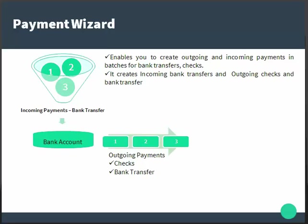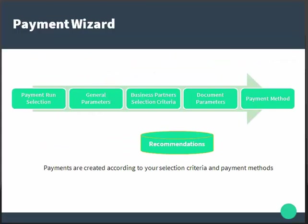Payments are created according to your selection criteria and payment methods. The main functions of payment wizard cover all incoming transfer payments, outgoing checks, and bank transfer payments. It also covers AP and AR documents and transactions that are not fully paid, as well as payments on account that are not allocated or reconciled to specific transactions.